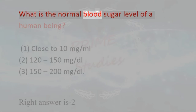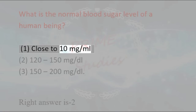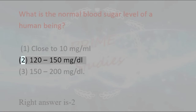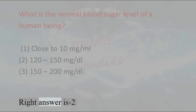What is the normal blood sugar level of a human being? 1. Close to 10 mg per ml, 2. 120–150 mg/dL, 3. 150–200 mg/dL. Right answer is 2 — 120–150 mg/dL.